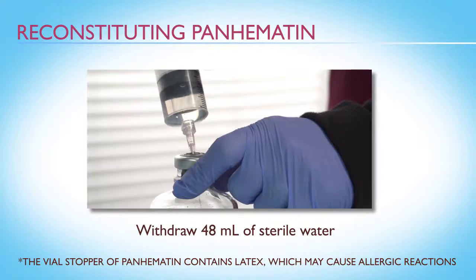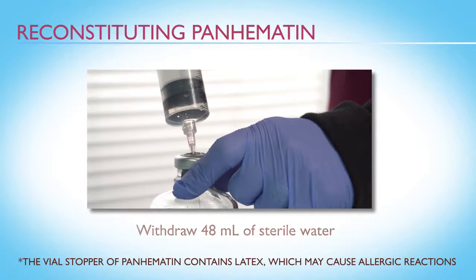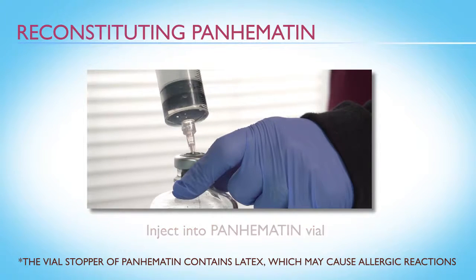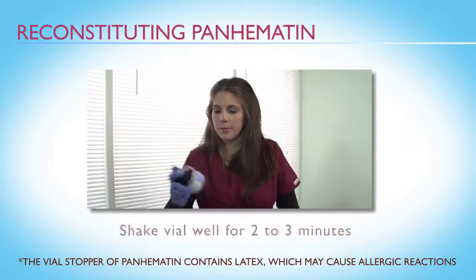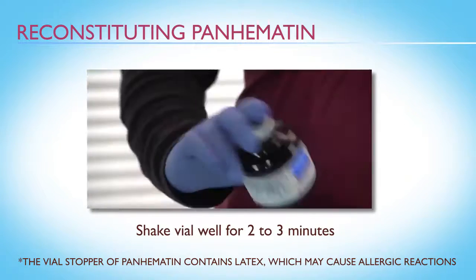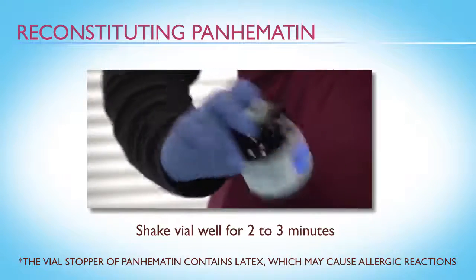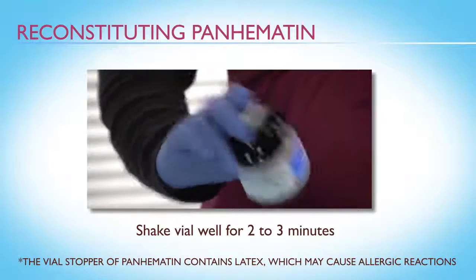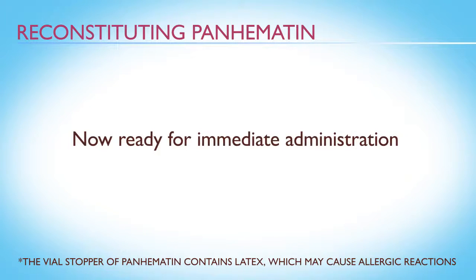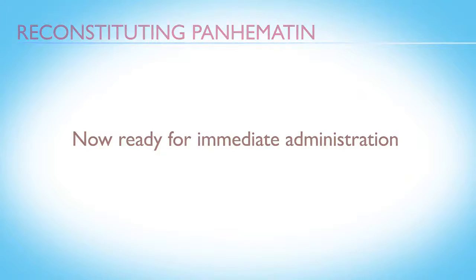Using the 60 milliliter syringe, withdraw 48 milliliters of sterile water and inject it into the Panhematin vial. Immediately afterwards, shake the vial well for two to three minutes to aid dissolution. Reconstituted Panhematin is not transparent. The Panhematin is now ready for immediate administration.